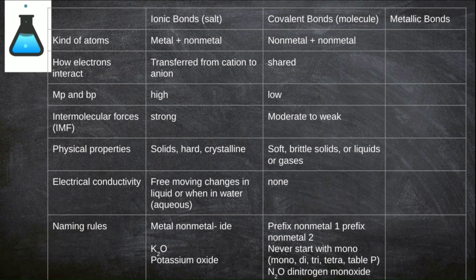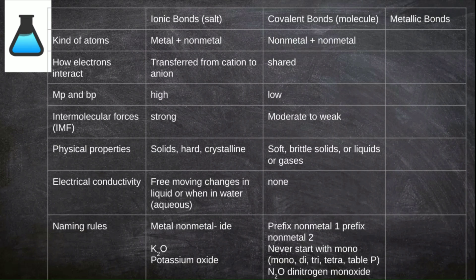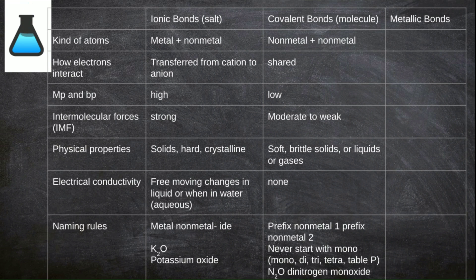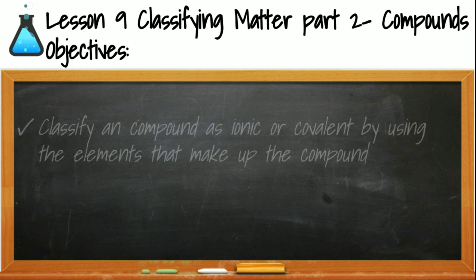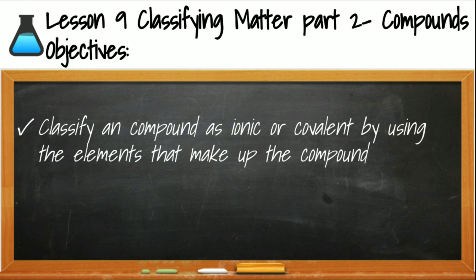They have a little bit more intricate naming scheme, as prefixes are needed to indicate the subscript for each element. For covalent compounds, we use the prefix mono for one, di for two, tri for three, and tetra for four. For numbers greater than four, you can use the prefixes found on reference table P. Here you can see this formula has two nitrogen, so we'll say dinitrogen, and then one oxygen, monoxide. Notice that we still end the name with the -ide, as that's the signal that we've completed the name of a compound. By now you should be able to classify a compound as ionic or covalent, based on the elements that make up the compound.